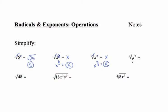For the third root of x to the ninth, I'll use the strategy of changing forms. This 9 would be the numerator of the exponent, and this 3 would be the denominator, giving x to the 9 thirds. 9 thirds reduces to 3, so this is x to the third power. Another way: what times itself three times makes x to the ninth? x to the third — because x³ raised to the third power, multiplying exponents, gives x to the ninth.